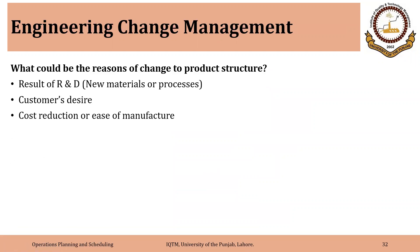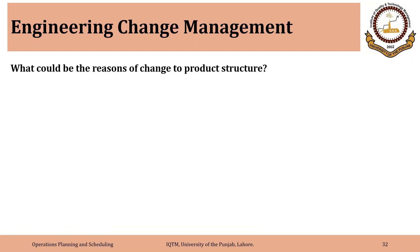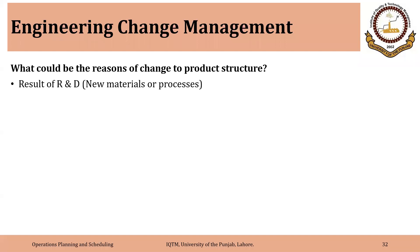We'll carry on with the same example, but first we will discuss what could be the reasons for change to product structure. Why should or could the product structure change? One of the reasons could be the result of R&D — the organization is constantly looking for new materials, processes, or technology. The older materials, processes, or components could be changed with new ones. That could be one reason for the change of product definition or product structure.